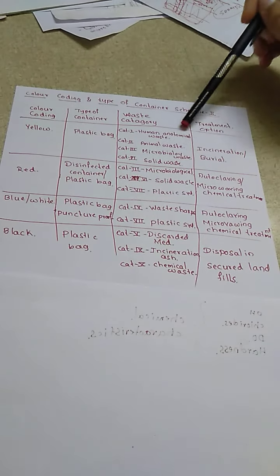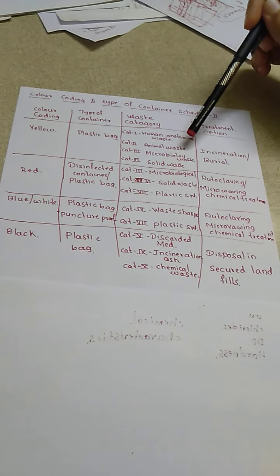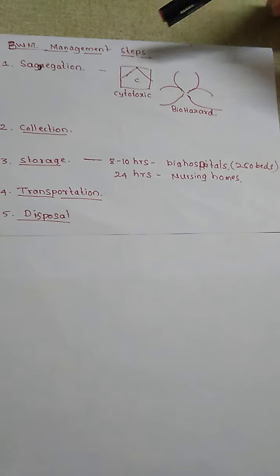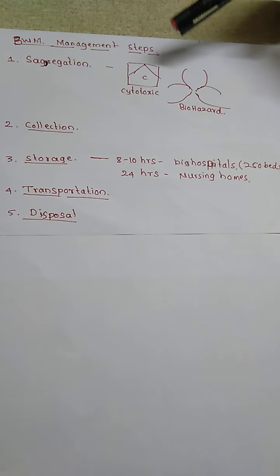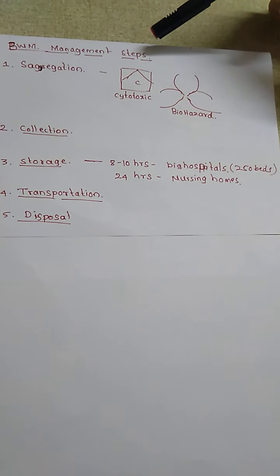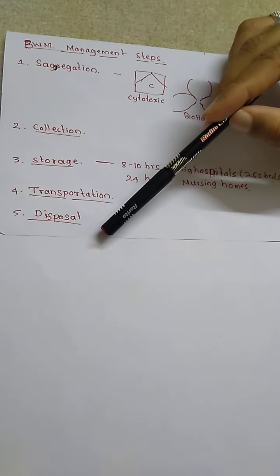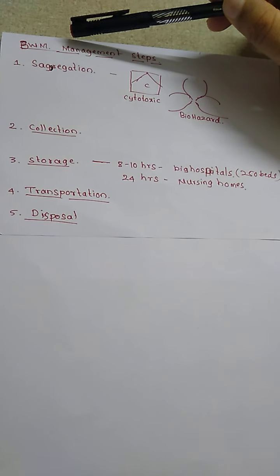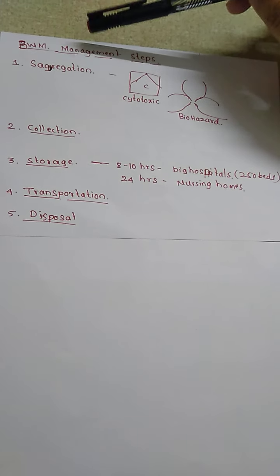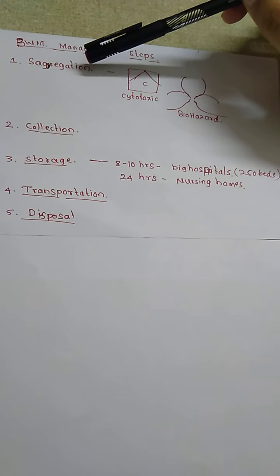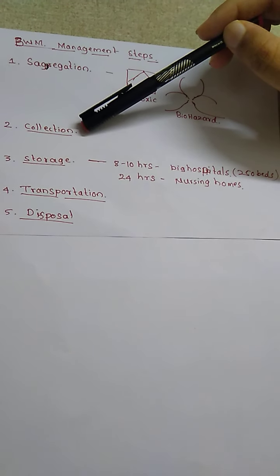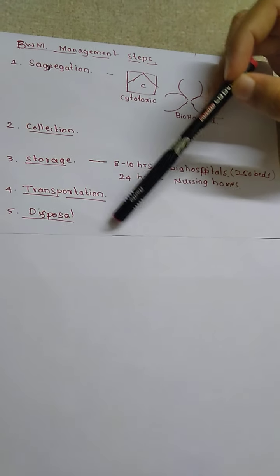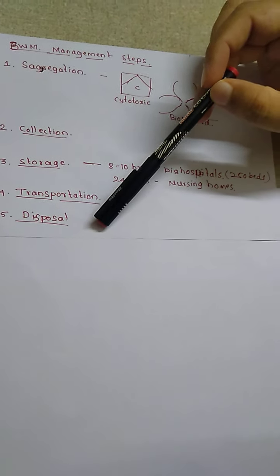The biomedical waste management steps cover everything from generation to disposal. The steps are: segregation, collection, storage, transportation, and then disposal.